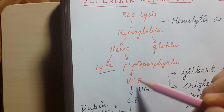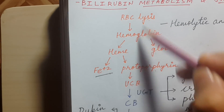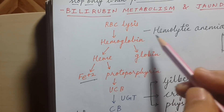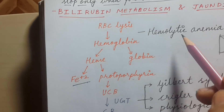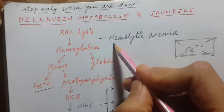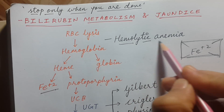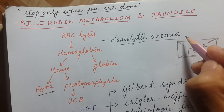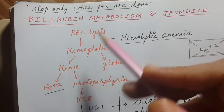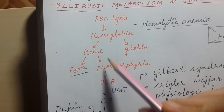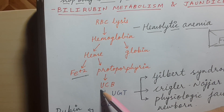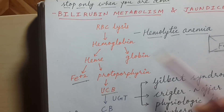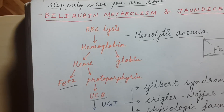All these steps occur in the blood. So the first cause of jaundice is hemolytic anemia. In hemolytic anemia there is excessive lysis of RBC, so we get more unconjugated bilirubin, which causes jaundice.